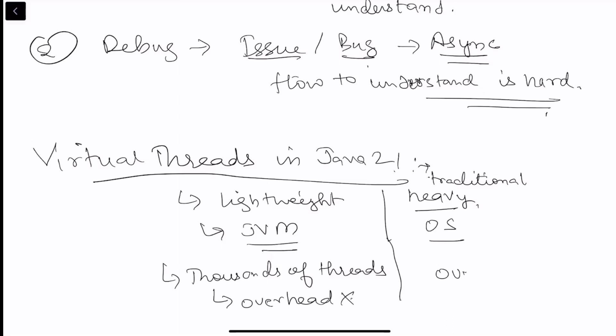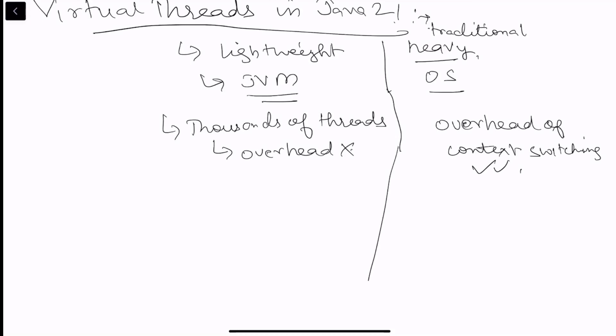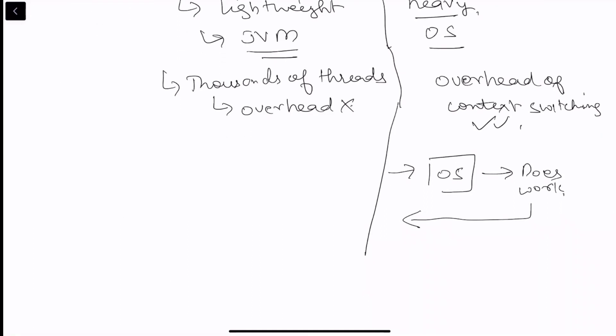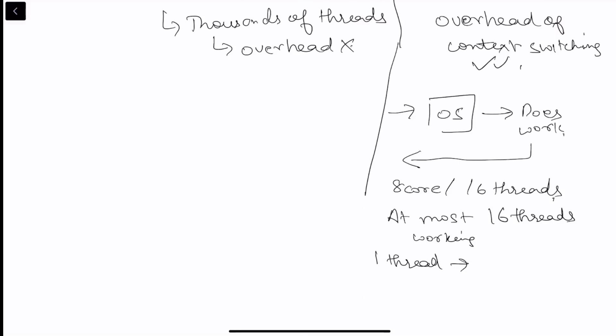What it means is that in the traditional OS threads as we saw earlier that whenever a request comes you actually have an OS thread being spun up and this OS thread does the work and sends the response back. What it translates is that since let's say we have an 8 core machine with 16 threads. Now at most there would be 16 threads that would be working. Now if one of the threads is calling a downstream service. It would result that this thread is in the waiting state and CPU cycles are wasted.